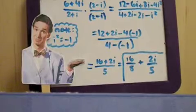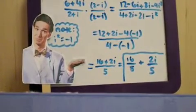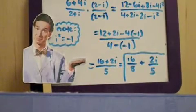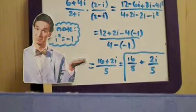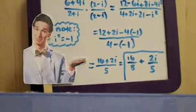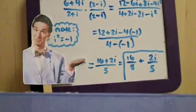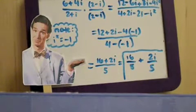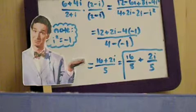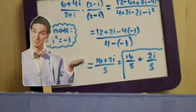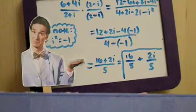For example, 6 plus 4i over 2 plus i. Multiply both top and bottom by 2 minus i, which is the conjugate of 2 plus i. Then multiply using the FOIL method, and you will get 12 minus 6i plus 8i minus 4i squared over 4 plus 2i minus 2i minus i squared. Then simplify, and you end up with 12 plus 2i minus 4 times negative 1 over 4 minus negative 1. Simplify some more, and you get 16 plus 2i over 5. You can break that into 16 over 5 plus 2i over 5. Note that i squared is negative 1.